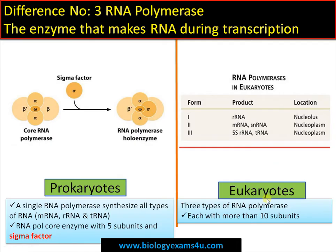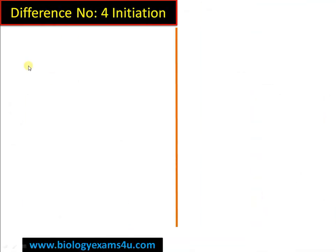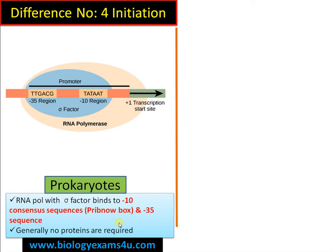Difference number four is regarding initiation. In prokaryotes, RNA polymerase with the Sigma factor recognizes a consensus sequence called the Pribnow box at the minus-10 region — this is the transcription initiation site. At the minus-35 region, there is another consensus sequence where RNA polymerase binds with the help of the Sigma factor. Generally, no additional proteins are required for binding to these promoter sites.